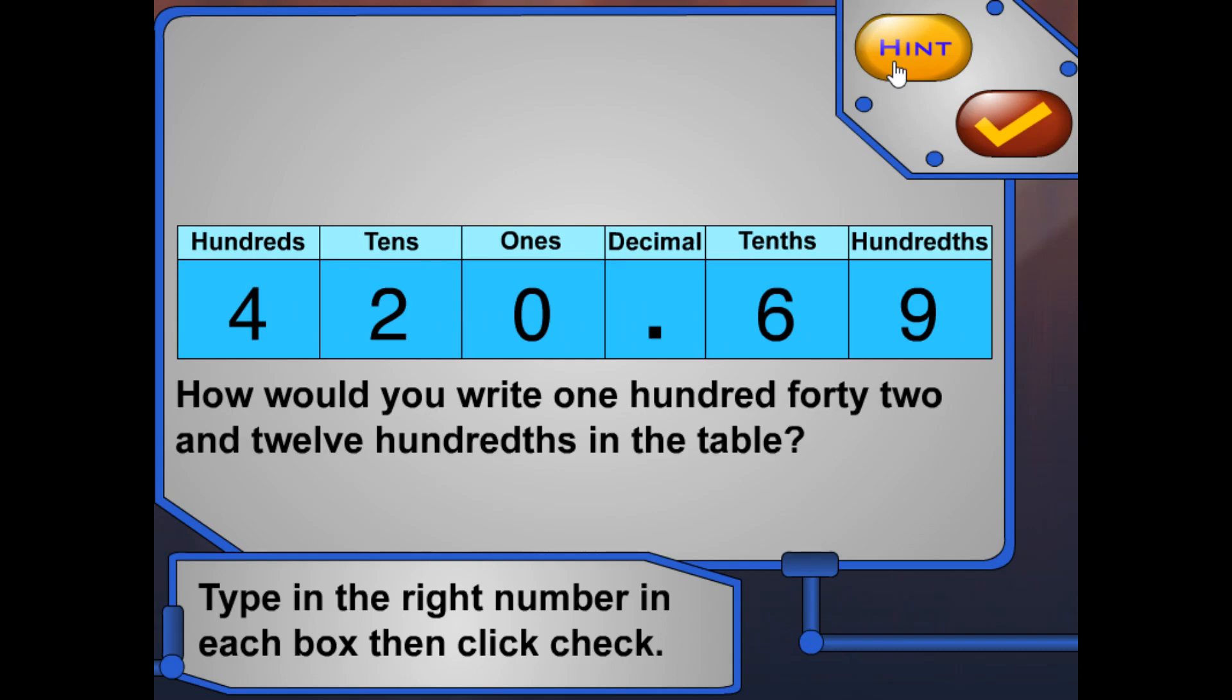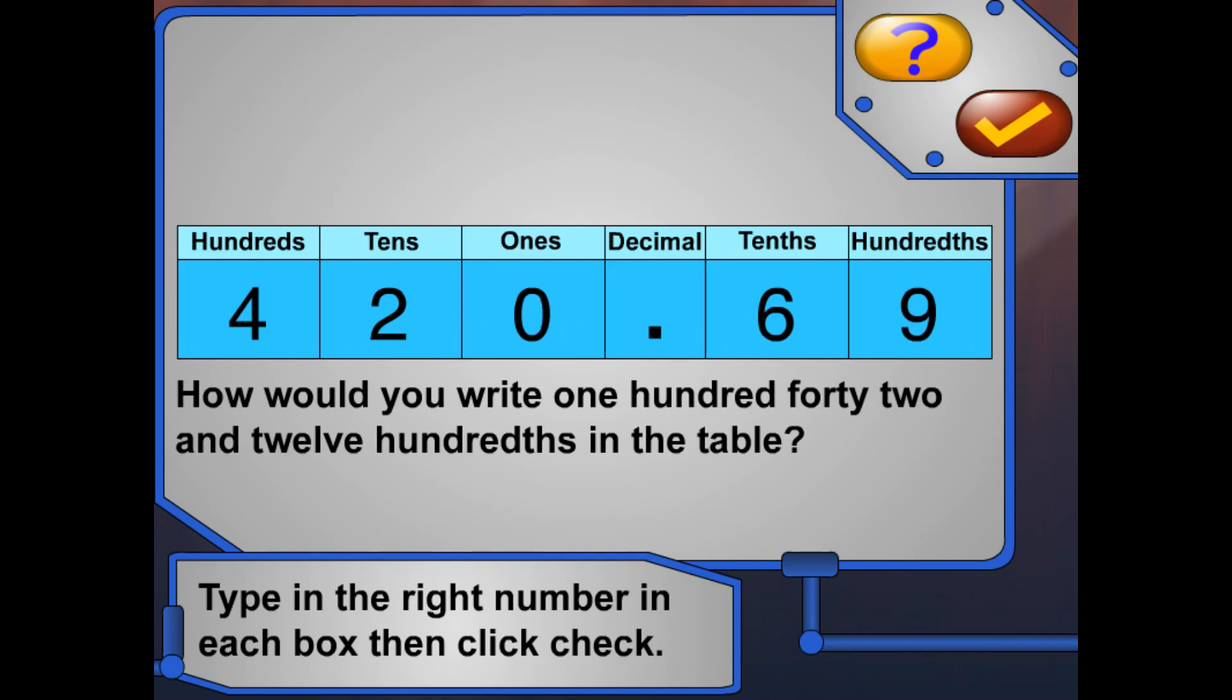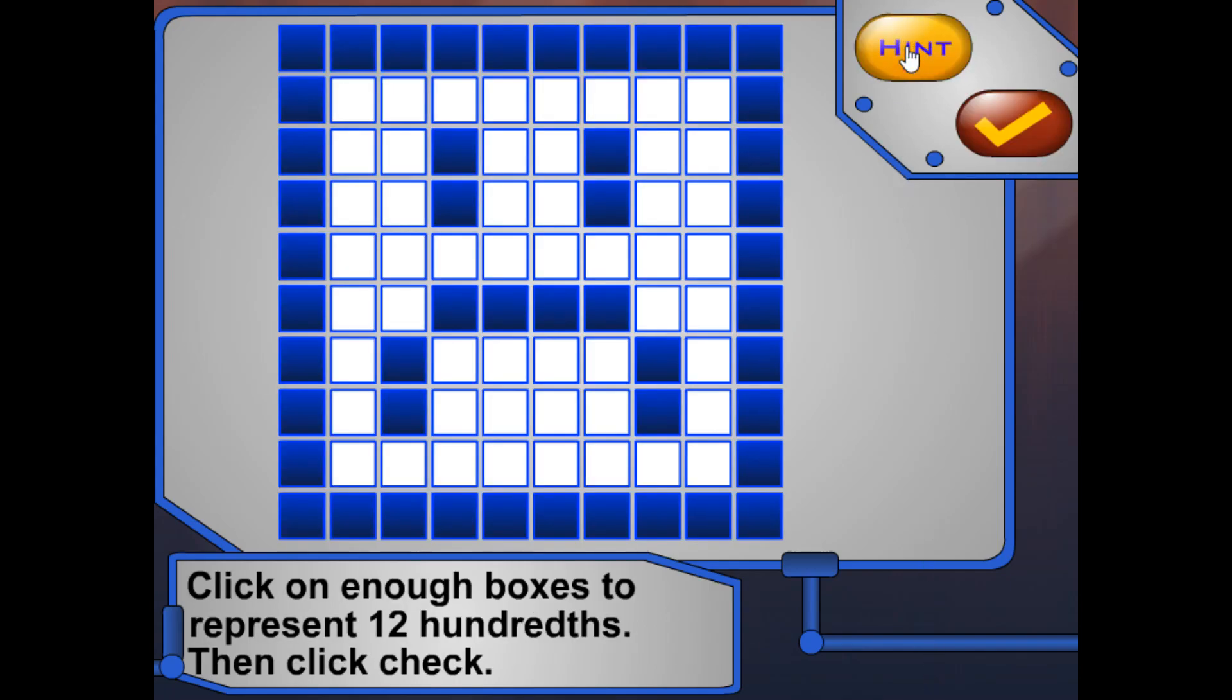The decimal point is like a pause that divides the number, while and is a word that divides a sentence. Twelve hundredths is twelve out of one hundred parts.